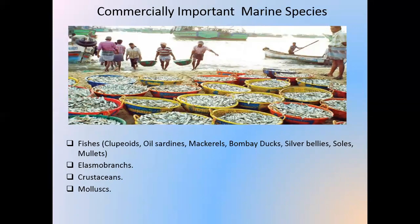Now I am coming to the point of commercially important marine species. India's marine fishery is a fast-developing sector with significant growth potential and plays a vital role. India has a vast coastline of 8,118 kilometers and an exclusive economic zone (EEZ) of 2.02 million square kilometers, and more than 20% of people live in the coastal area and are engaged with marine fisheries. Generally, many fishes like clupeids, oil sardines, mackerels, Bombay ducks, silver bellies, shoals, and mullets are the important main species.